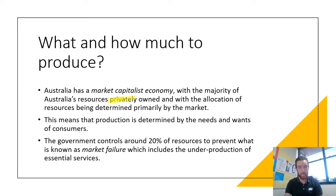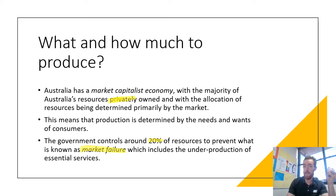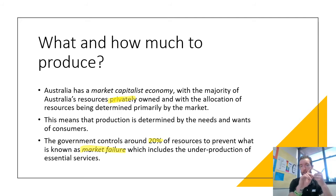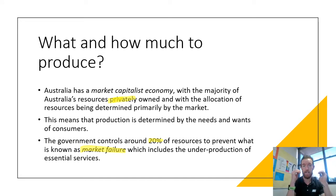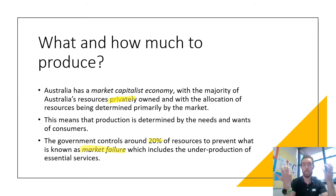The government controls about 20 percent of resources to prevent what's called market failure, which includes the underproduction of essential services or the overproduction of goods and services that negatively impact living standards. When we look at the underproduction of essential services, we look at things like education, health care, and parks — anything that isn't really profitable for private businesses. The government provides these because they make society better off and we need them.